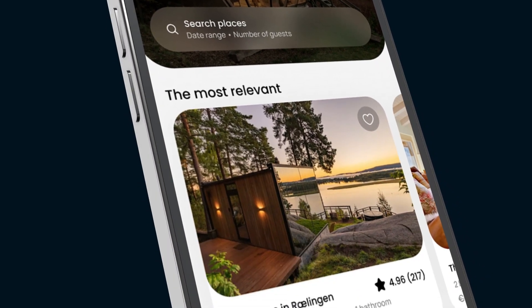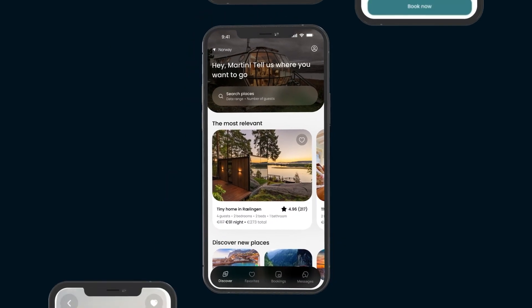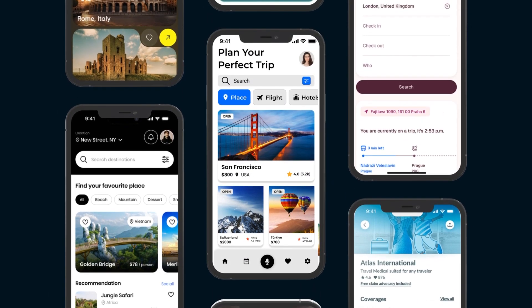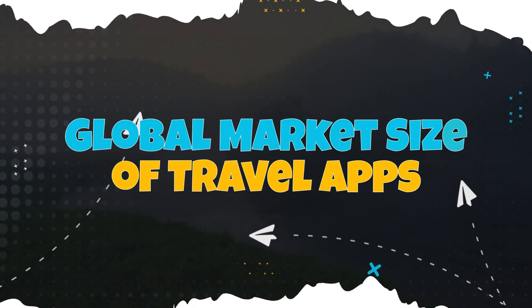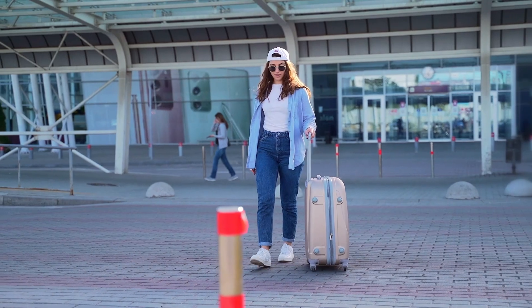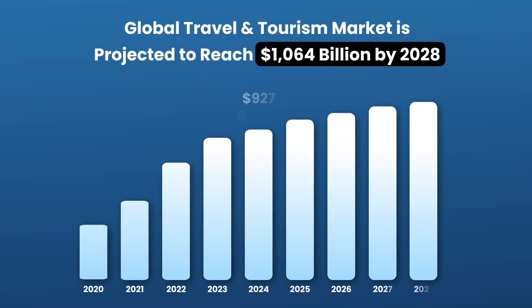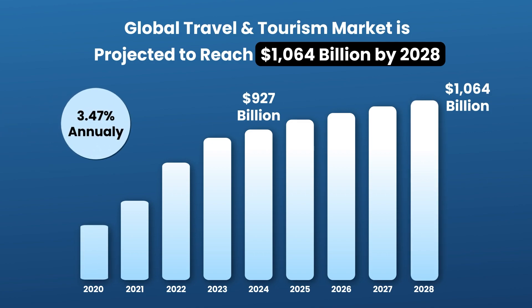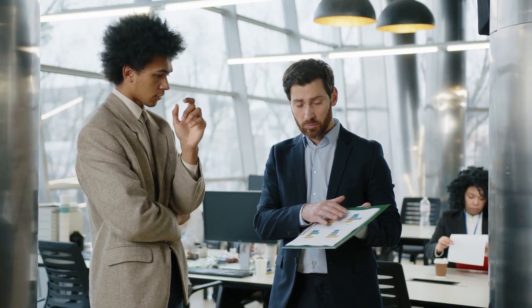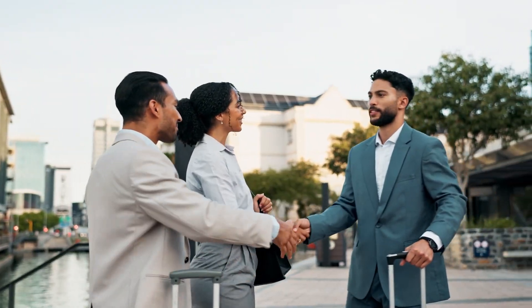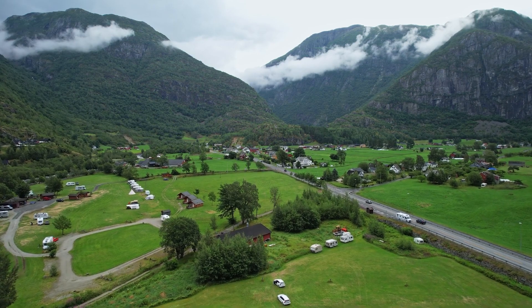Now that you understand the different types of travel apps, you are better equipped to decide on the type of travel app you want to develop for your specific travel business. The global travel and tourism market is expected to reach $927 billion by 2024. With an annual growth rate of 3.47%, it is projected to reach $1,064 billion by 2028, showing plenty of space and opportunity for new players to carve out their niche in the travel app industry.